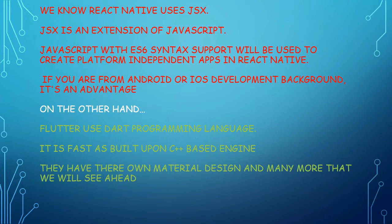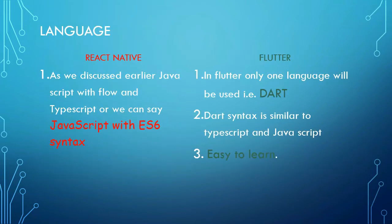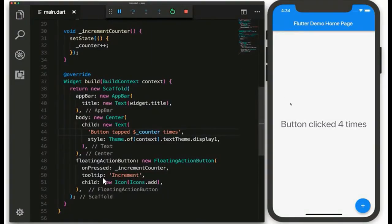Flutter uses the Dart programming language. It is fast and built upon a C++ based engine, and it has its own material design and many more features. So here we have to learn JavaScript and TypeScript for React Native, whereas for Flutter we have to learn Dart, which is a completely new language for most programmers. In Flutter, only one language — Dart — is used, whose syntax is similar to TypeScript and JavaScript.